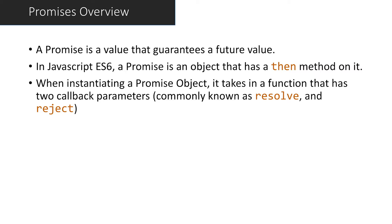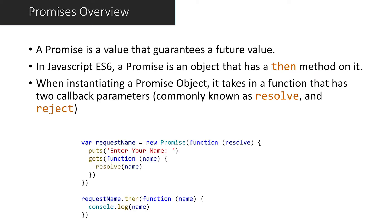When you instantiate a promise object, it takes in a function that takes in two function parameters — or callback parameters. Here's an example: we request a name. To turn this callback code into a promise, we put the async callback code inside of this function, and we have this resolve parameter that says run the resolve function whenever we have the name. Does this make sense — how to create a promise instance or object?